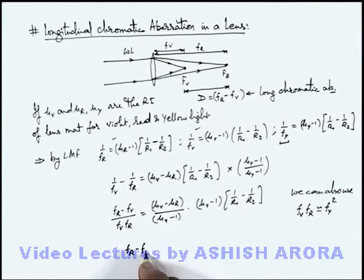f_r minus f_v is equal to this will be f_y square and this is 1/f_y and this is omega. So this will give us omega multiplied by f_y. This is the only approximation we are taking over here.